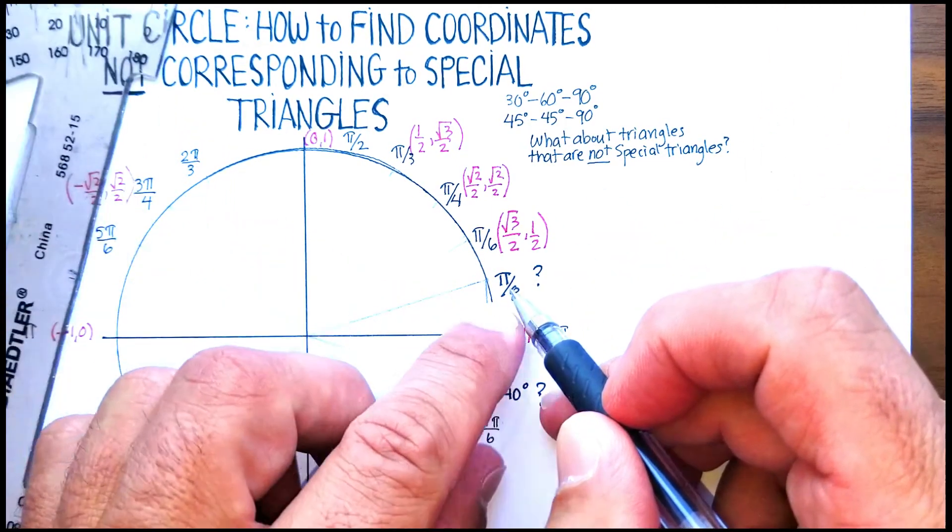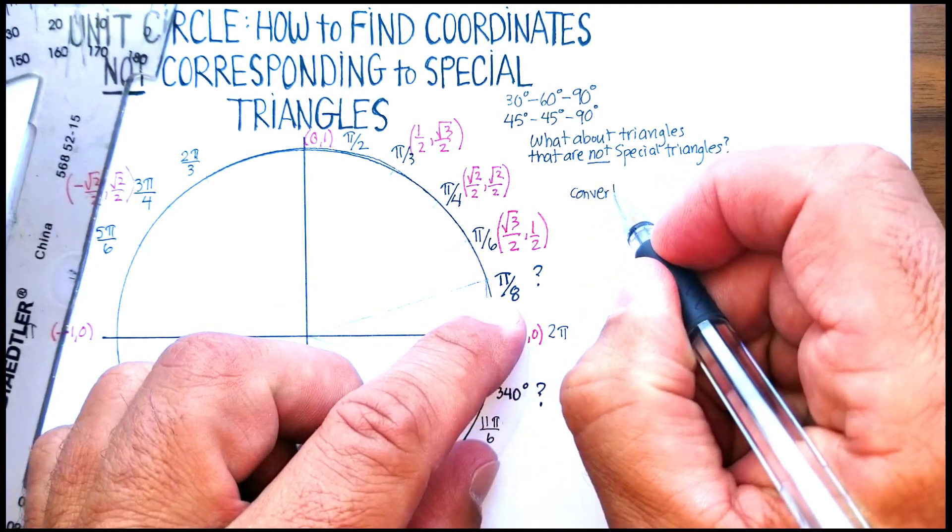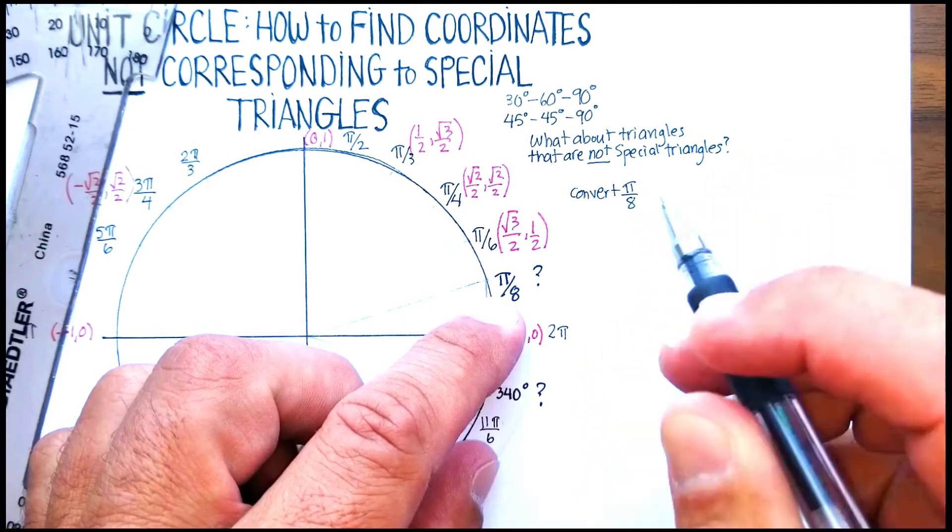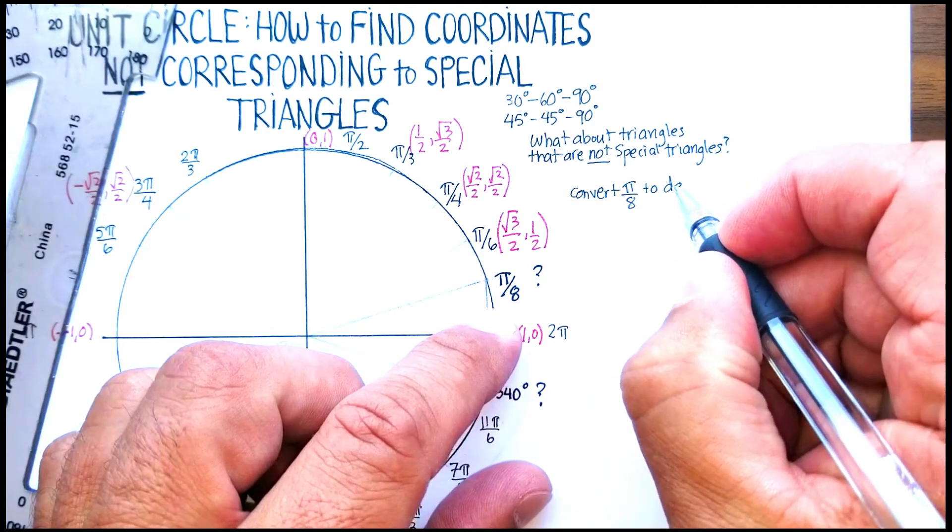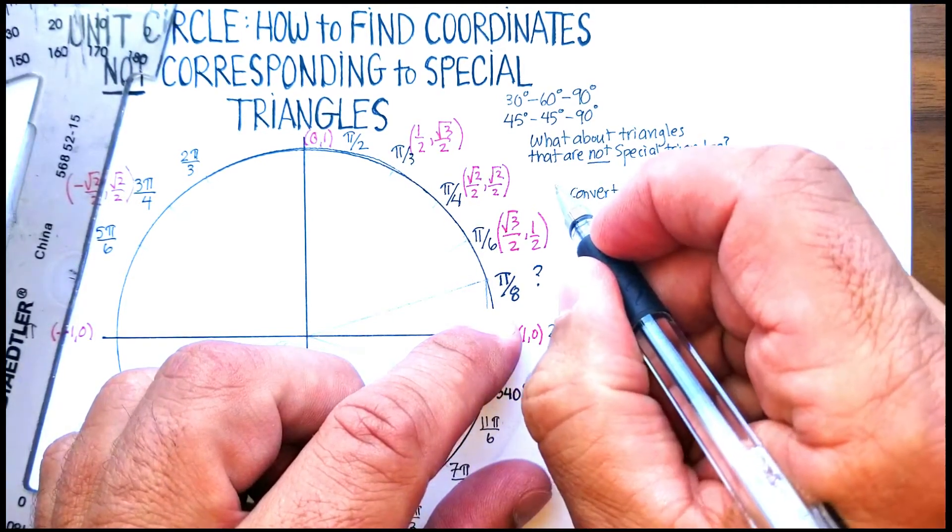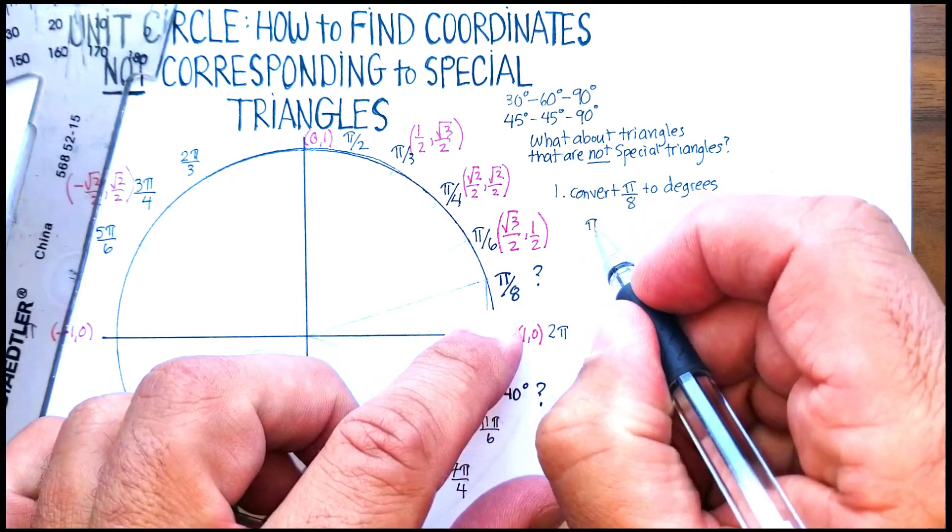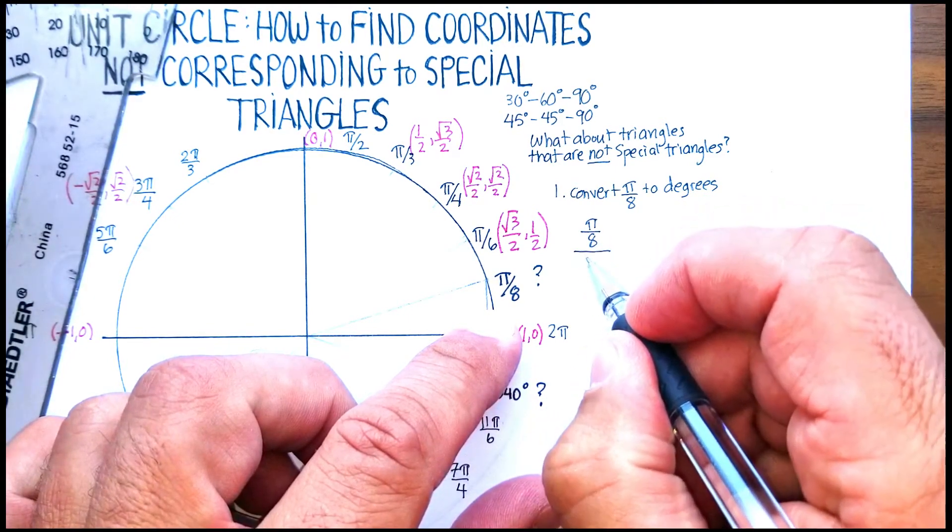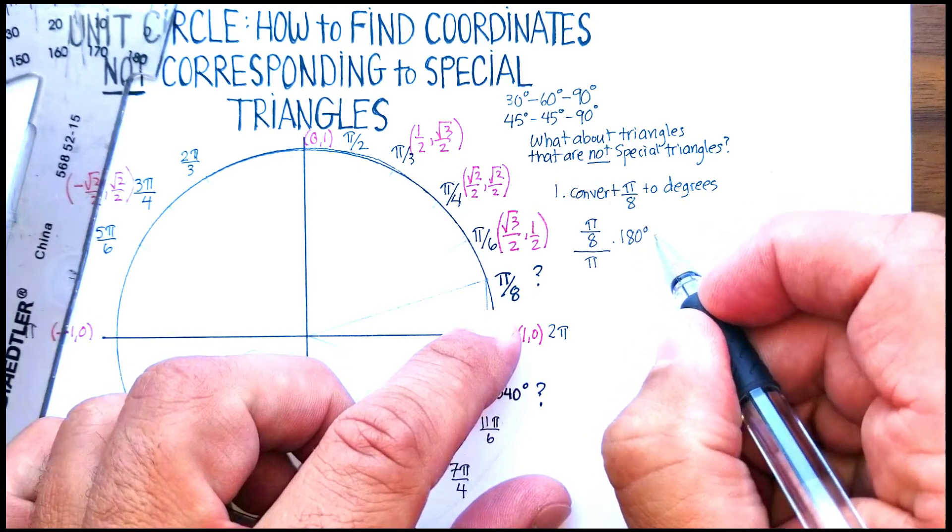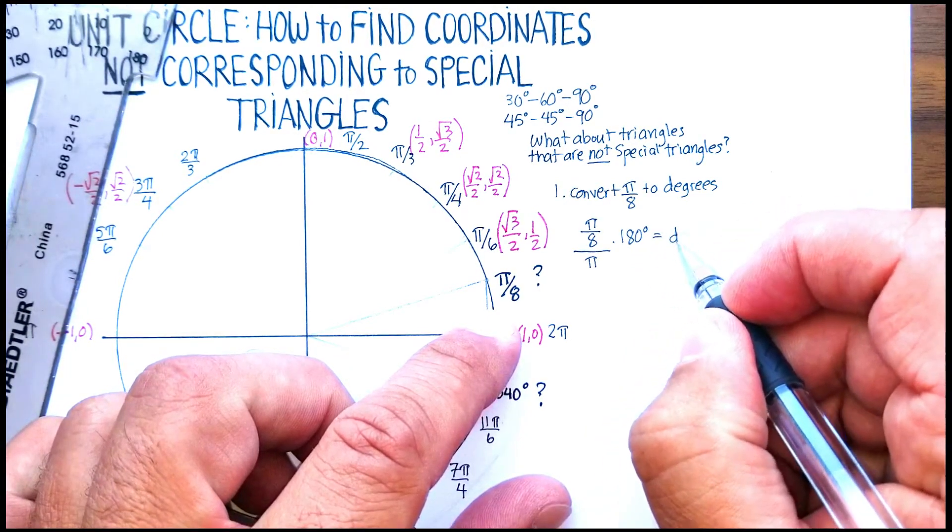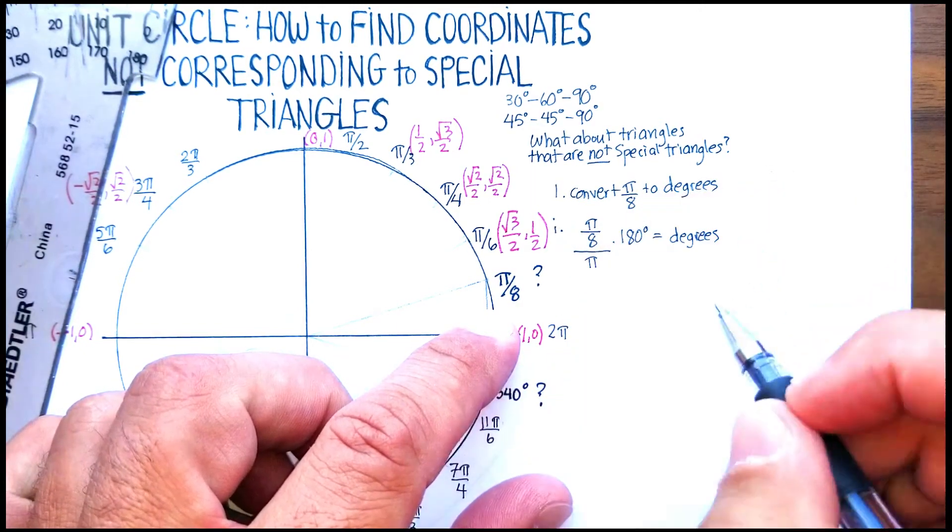So how do we do that? Our first step here is to convert π/8, or whatever the individual radian might be, to degrees. Let's do that first. So let's convert. Remember the formula for that is the number of radians divided by π times 180° will give you your number of degrees.